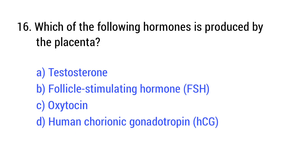Question number 16. Which of the following hormones is produced by the placenta? The right answer is option D: Human chorionic gonadotropin (HCG).